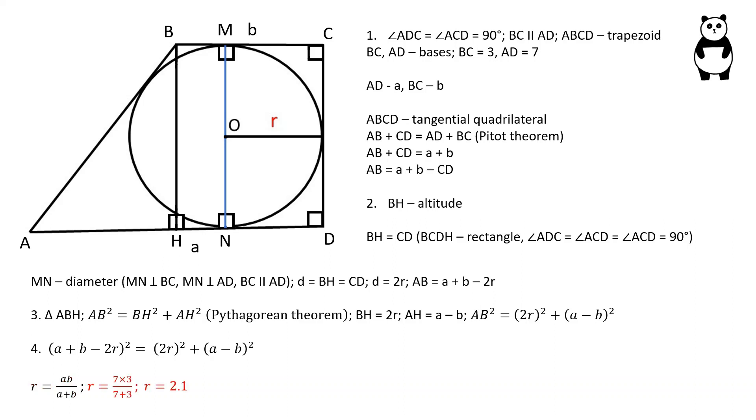Let's substitute in our original values to determine the radius. 7 times 3 over 7 plus 3 is equal to 2.1 and this is our answer.